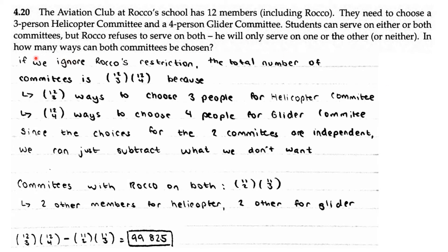AoPS Counting and Probability 4.20. The Aviation Club at Rocco's school has 12 members, including Rocco. They need to choose a three-person helicopter committee and a four-person glider committee. Students can serve on either or both committees, but Rocco refuses to serve on both — he will only serve on one or the other, or neither.